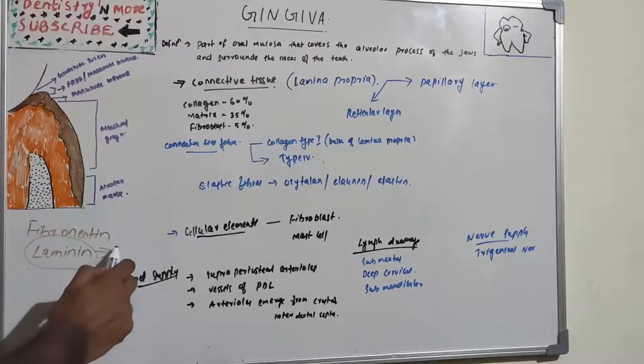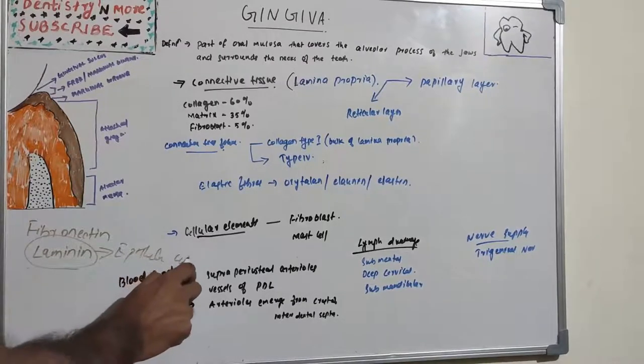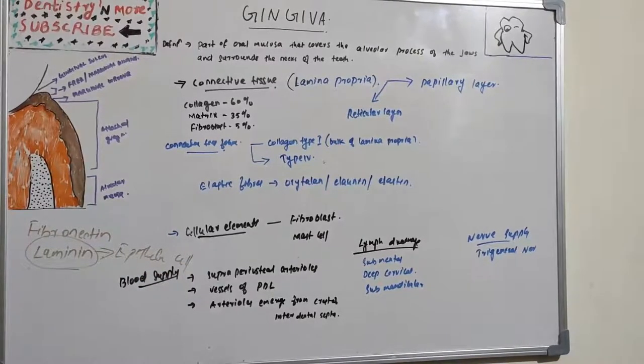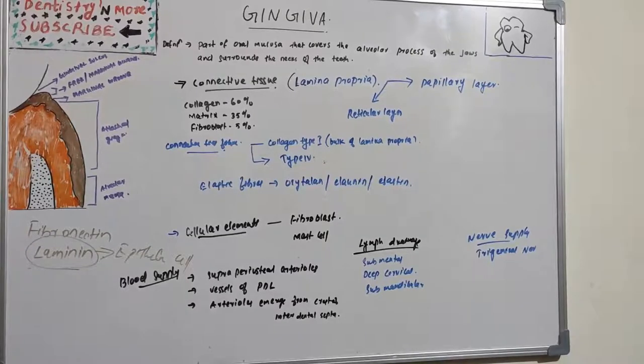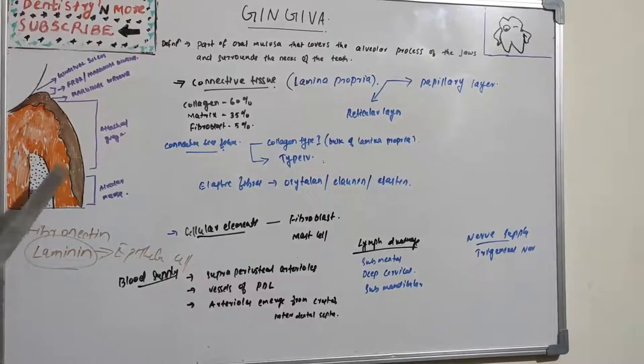We have three types of connective tissue fibers: collagen, reticular, and elastic fibers. The collagen type 1 forms the bulk of lamina propria and provides the tensile strength to the gingival tissue. So we have collagen, reticular, and elastic types.